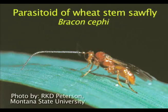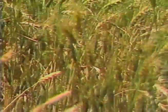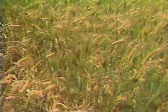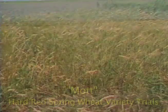If the producer decides to swath grain, use a high swathing height to conserve the parasitoid that attacks the wheat stem sawfly. If 15 percent of the crop was cut by sawfly in the current year, a solid stem variety of wheat is recommended for the following wheat planting season.